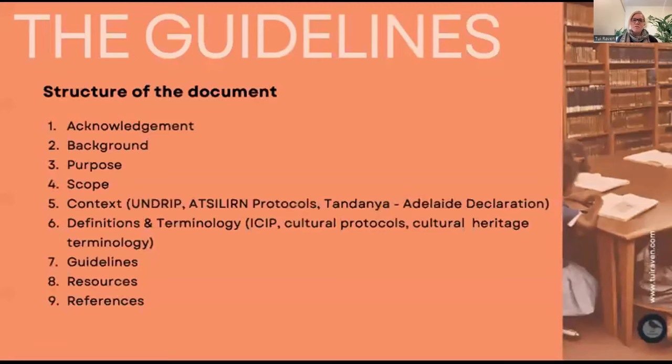The structure of the guidelines is pretty self-explanatory. It is a large document for a very good reason — we need you to understand the context around why it's been created, and also the definitions and terminology. There are a couple of things that are out of scope: access protocols — it will be up to each library or archive to decide and write those — community engagement models, and writing an Indigenous cultural and intellectual property framework or protocol or policy. The guidelines don't include those, but they are premised on them.